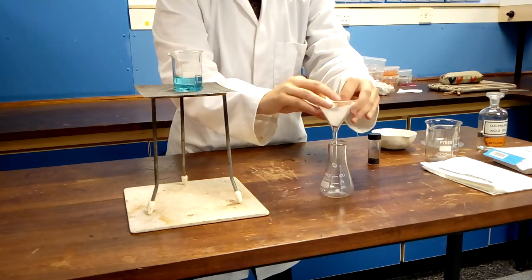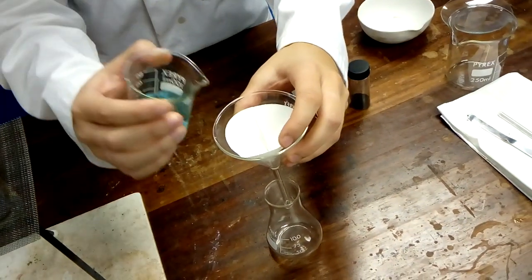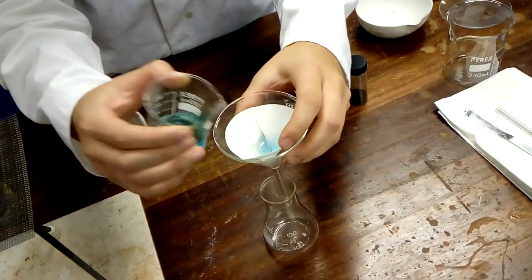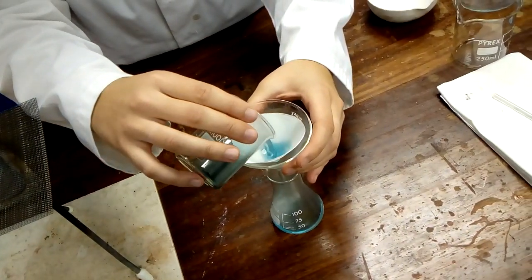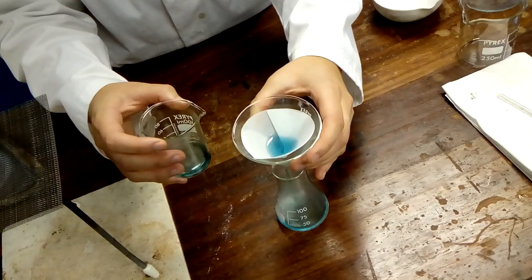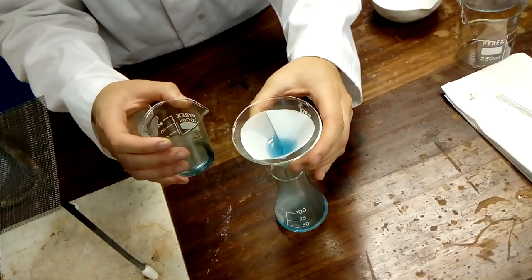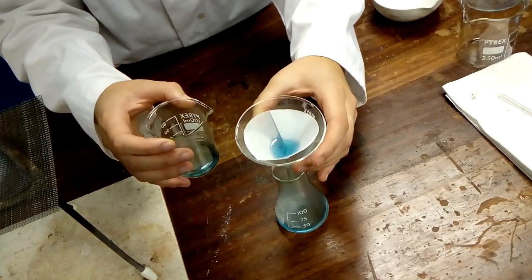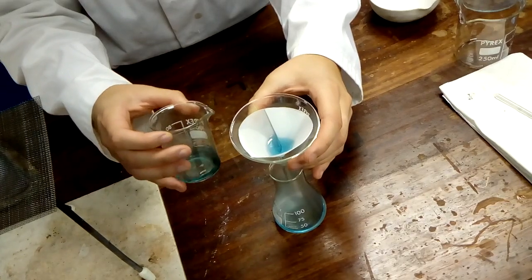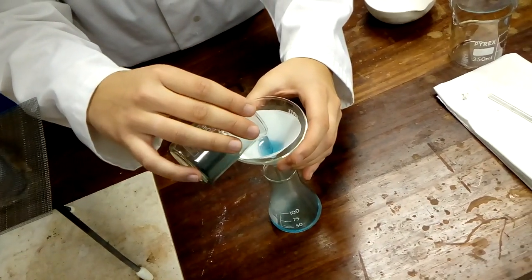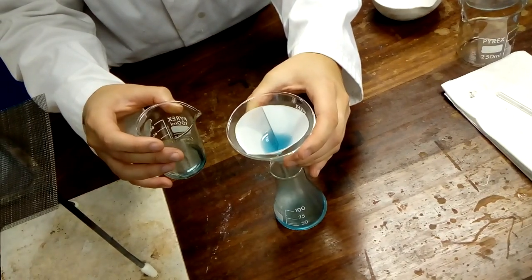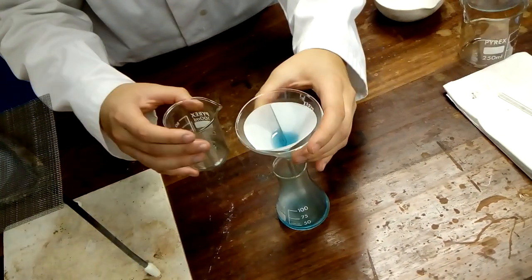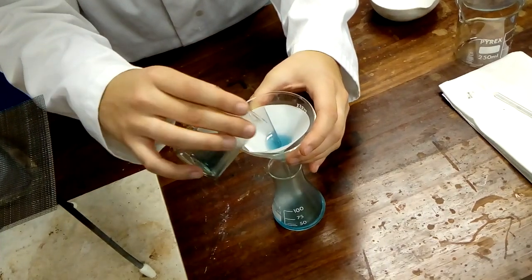When the beaker has cooled enough for you to handle you can start to filter. Lift the funnel above the conical flask and pour in the contents slowly by adding small volumes at a time. Be patient as it can take a while for the solution to filter through. As you get towards the bottom of the beaker give the solution a swirl to make sure you filter out all of the copper oxide powder.